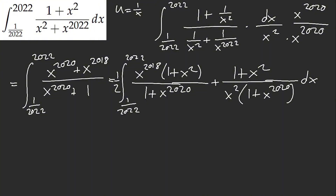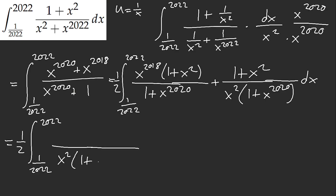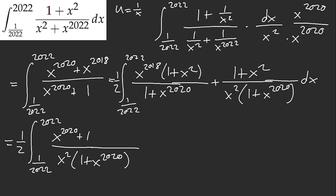We can factor this out. What if we multiply them together? We have x squared times 1 plus x to the power of 2020. We technically need to multiply this by x squared. So we have x to the power of 2020 times 1 plus x squared, plus 1 plus x squared. Technically we can factor this — we get x squared plus 1. Oh, that's awesome! How cool is that?